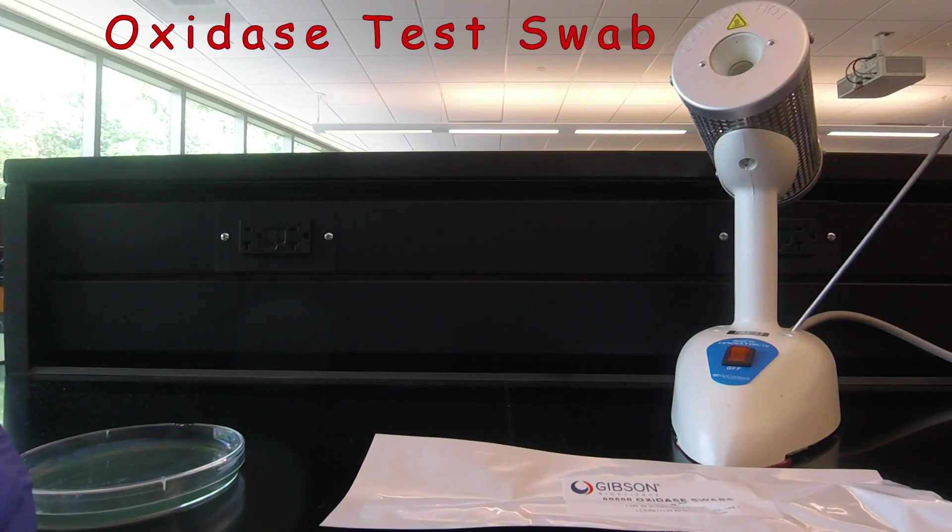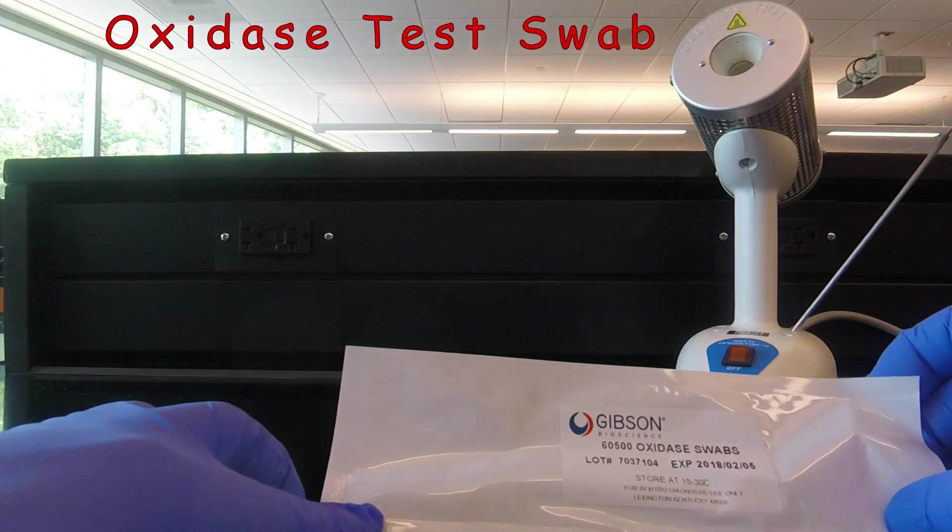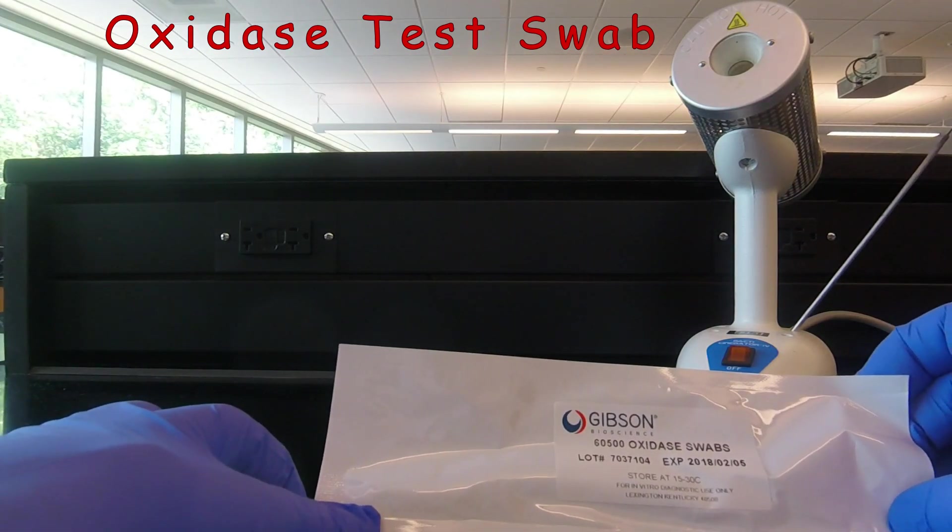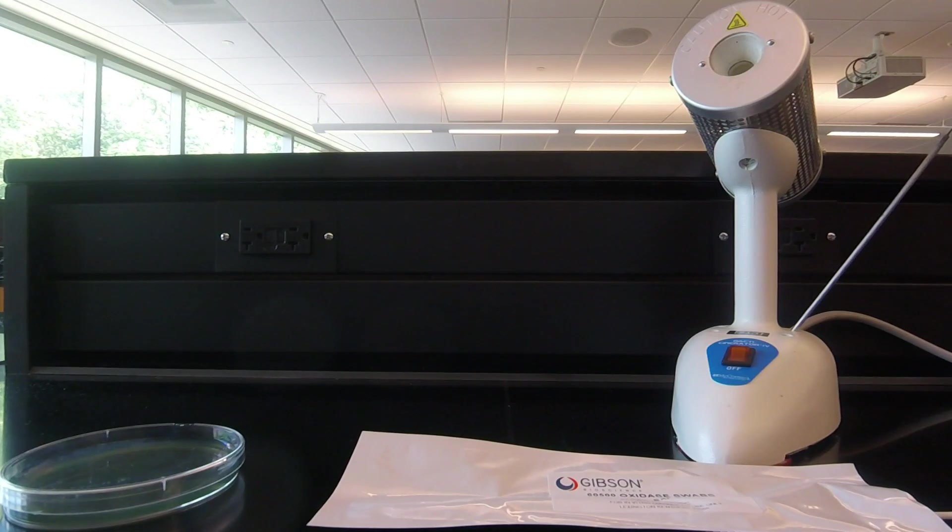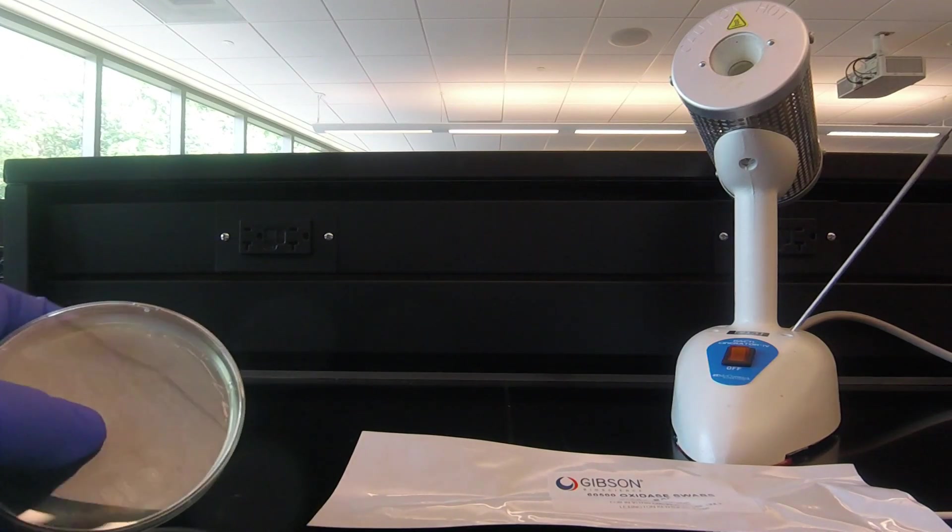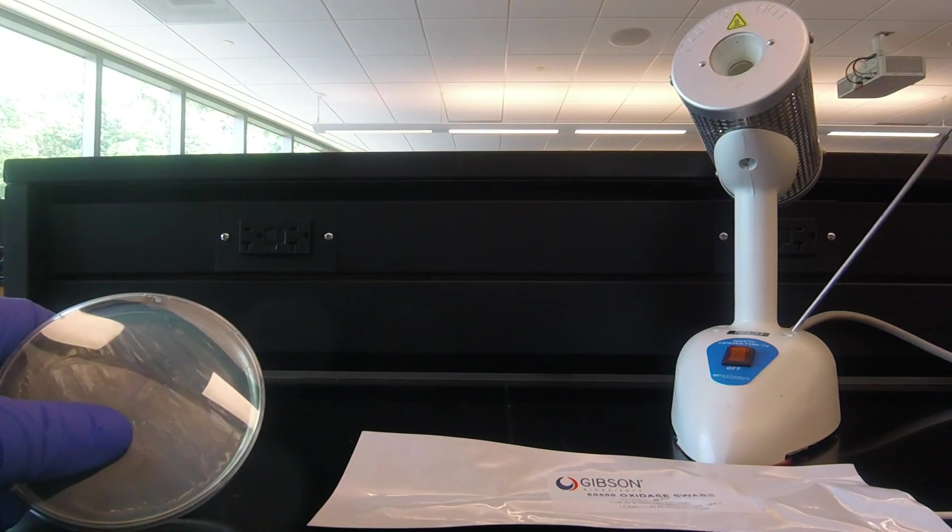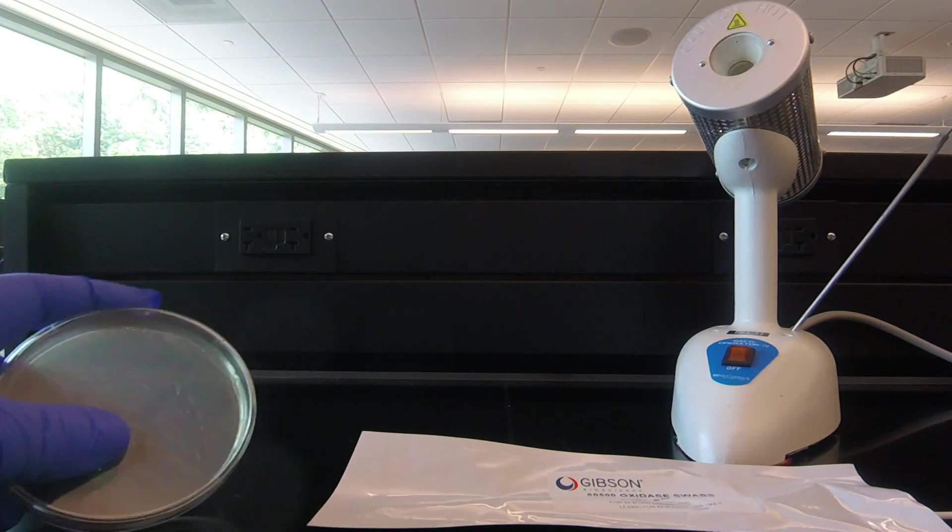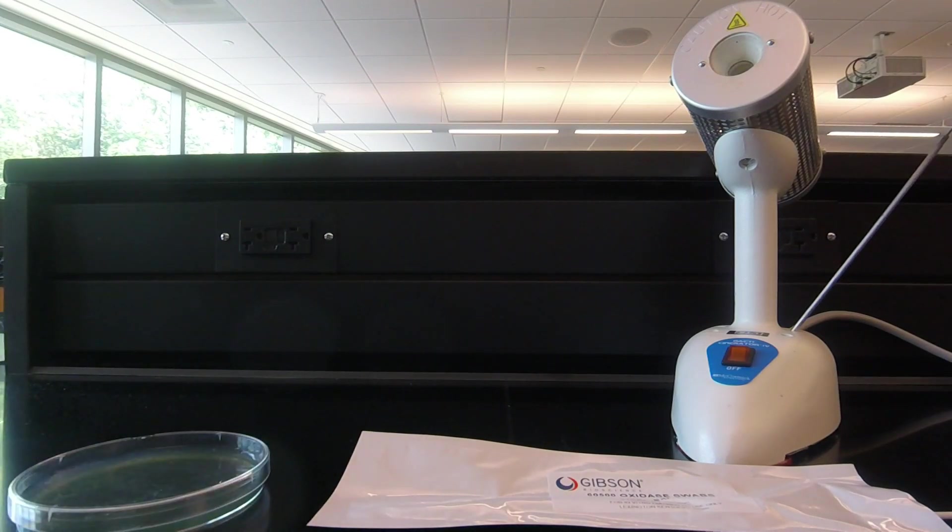Today we're going to perform the oxidase test using an oxidase swab manufactured by a company called Gibson. The swab contains an oxidase reagent called TMPD. If the bacterium possesses the enzyme cytochrome C oxidase, this enzyme will oxidize the TMPD in the swab, converting it into a compound called endophenol blue, which is purple to black in color.